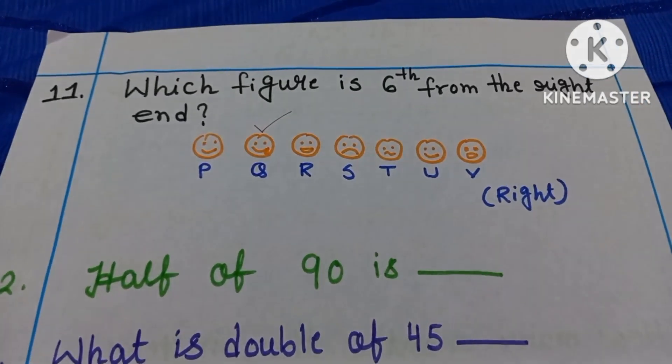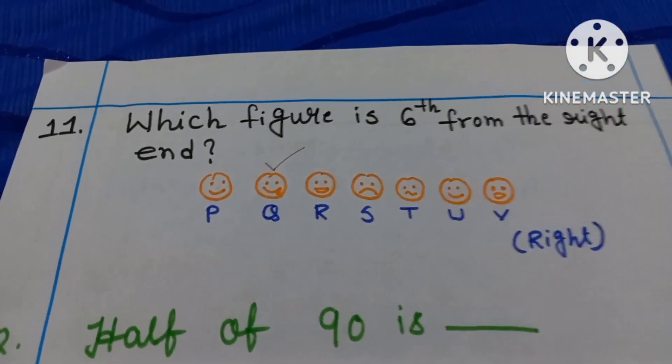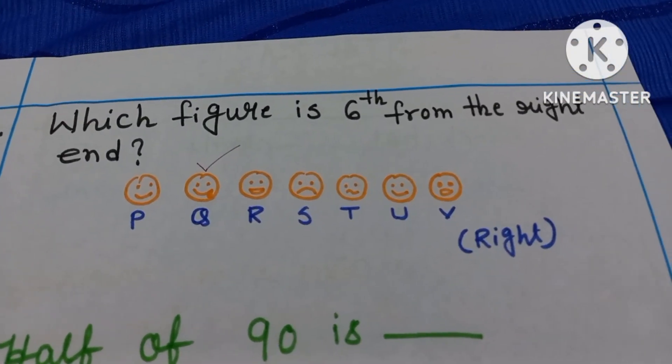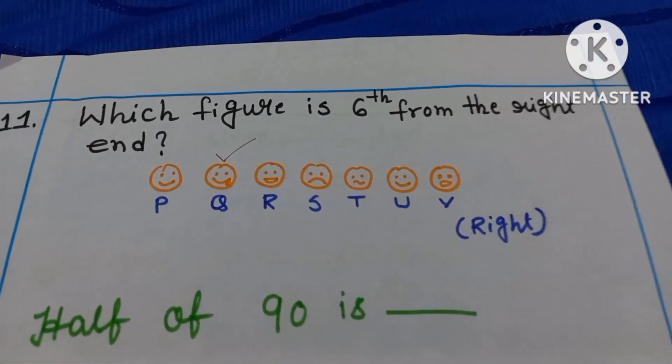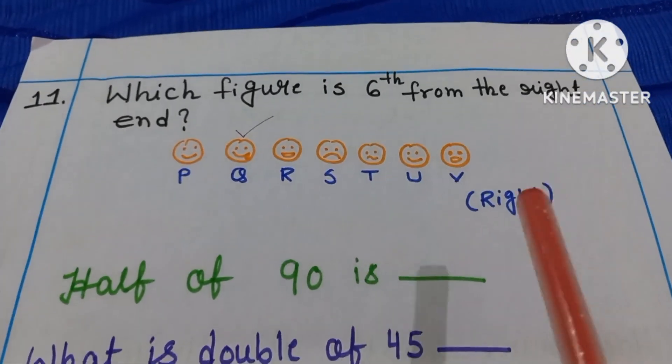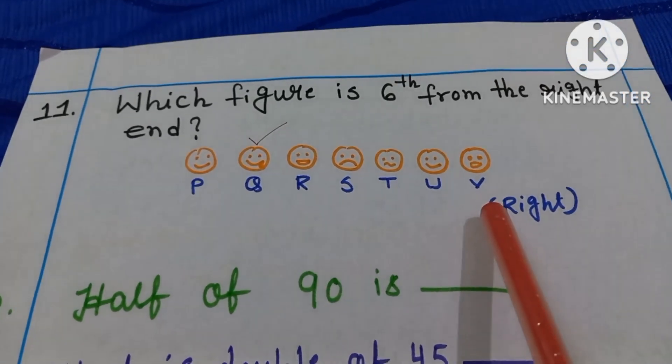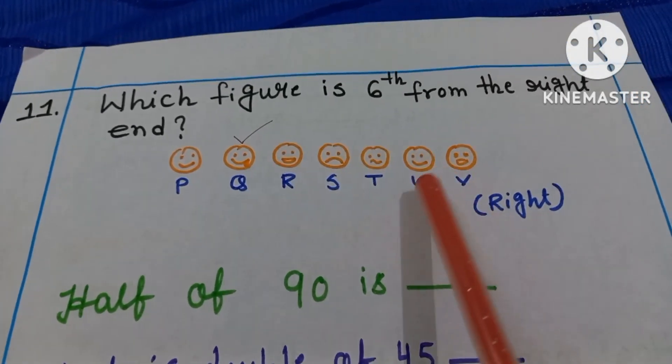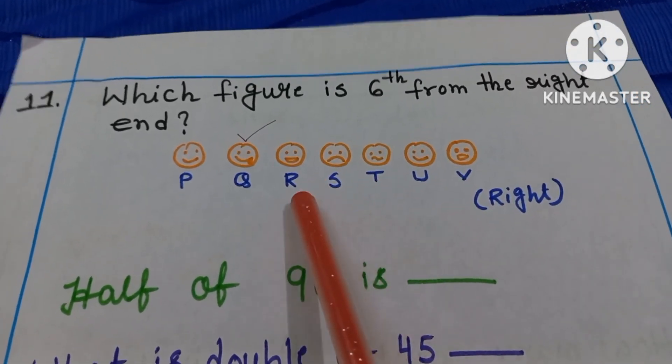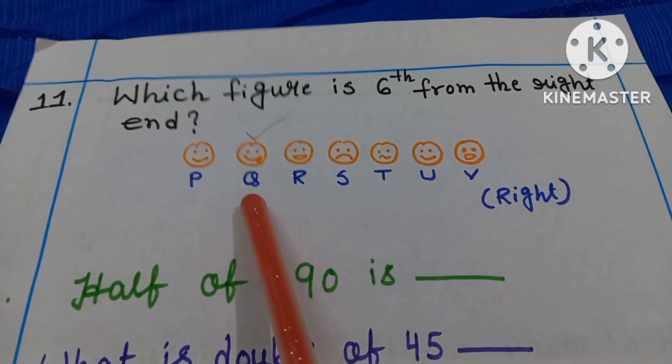Question number 11. Let us read together. Which figure is 6th from the right end? Your right side, which one is your right side? Yes. So from here you have to start your counting. 1st, 2nd, 3rd, 4th, 5th and 6th. That means your answer will be Q.